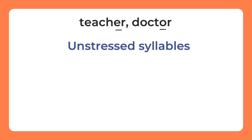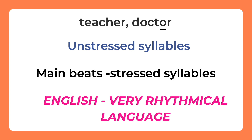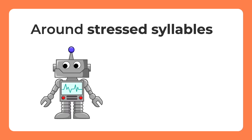We use the schwa sound to allow unstressed syllables to be said more quickly. This way, the main beats of spoken words are easier to place on stressed syllables. It all comes down to the English language being a very rhythmical language — the sound of the language is organized around the stressed syllables. To sound natural in English, we need to put a lot of stress on stressed syllables and relax our mouth on the unstressed ones. That is when the schwa sound comes in handy — otherwise, we would sound robotic.